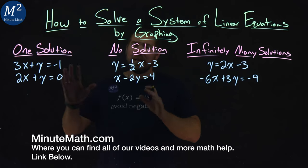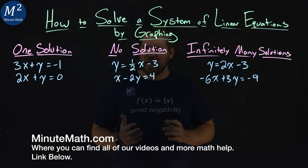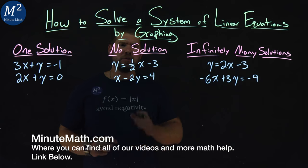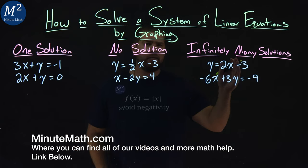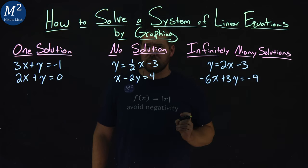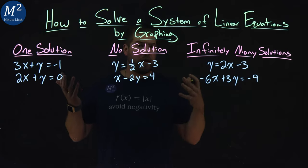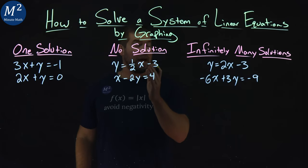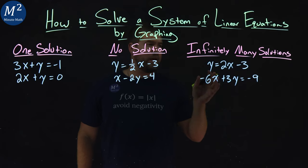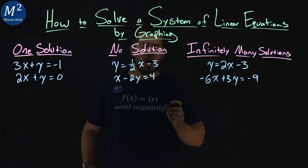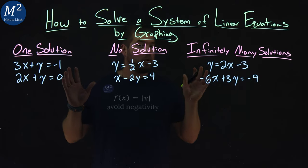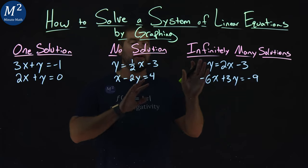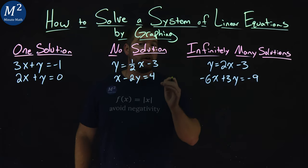We're given three sets of systems of equations here. I've labeled each one: one solution, no solution, and infinitely many solutions. So the first one will have one solution, the second one will have no solutions, and the third one will have infinitely many solutions. We're going to solve each one by graphing and I'll show you the key identifiers to see when each one of these will occur.